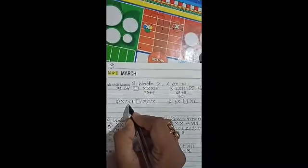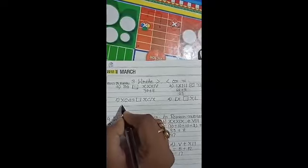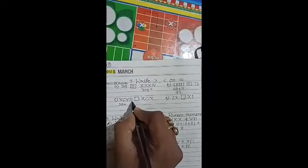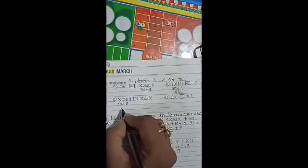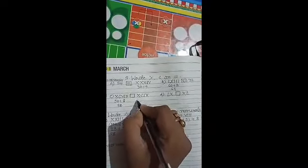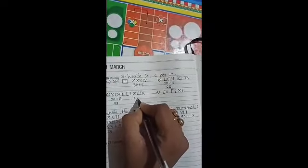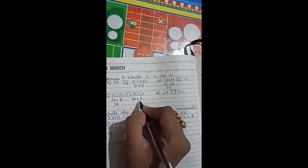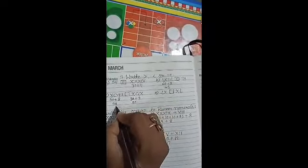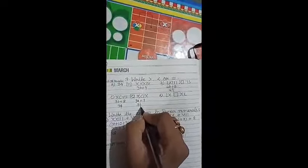Here, XCVIII. XC means 90 plus VIII means 8, means 98. And, here, XC means again 90 plus IX means 9. This is 99. 98 and 99. 98 is less than 99. Got it?